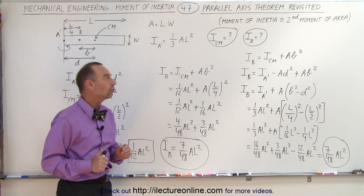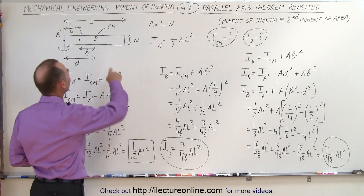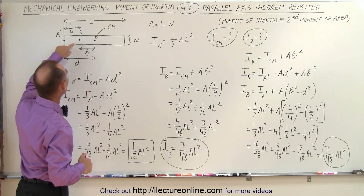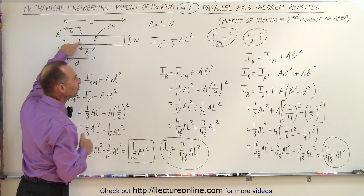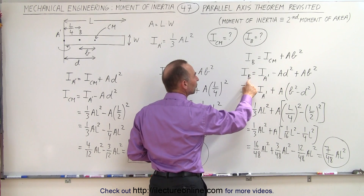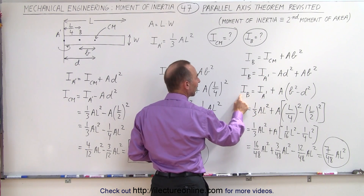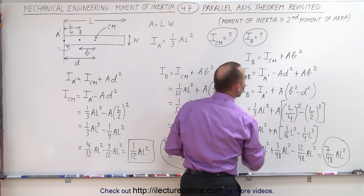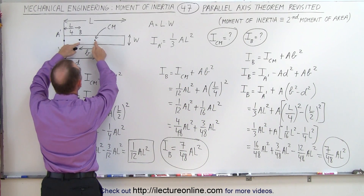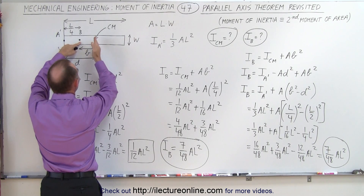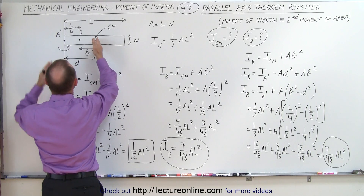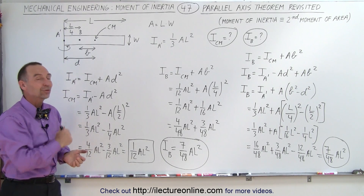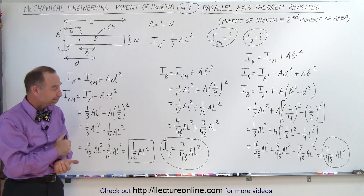This is interesting and very useful. Normally we use the parallel axis theorem to utilize the moment of inertia at the center of mass and then move it to a new position. But sometimes we know the moment of inertia at one position and want to know it at a different position. We can say IB equals IA plus the mass or area times (B squared minus D squared), where B is the distance from the center of mass to the position we want, and D is the distance from the center of mass to the position where we already know the moment of inertia.